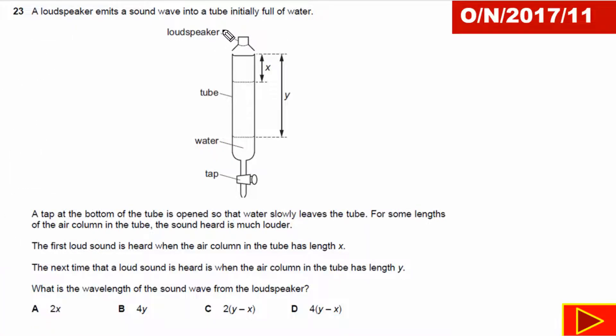For this question, first of all we need to understand this apparatus - the understanding of this apparatus is very important. If we look carefully, there is one speaker that is fixed at the top of the tube. This tube is initially full of water, and we also have one tap that is fixed at the bottom of this tube. By opening this tap we can lower water level by releasing the water - the water will come out when we open this tap.